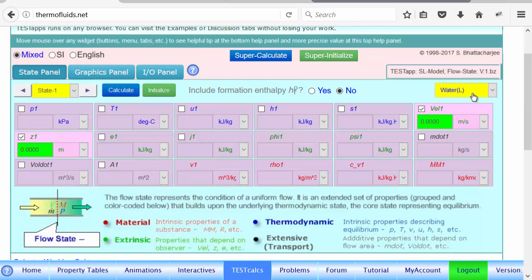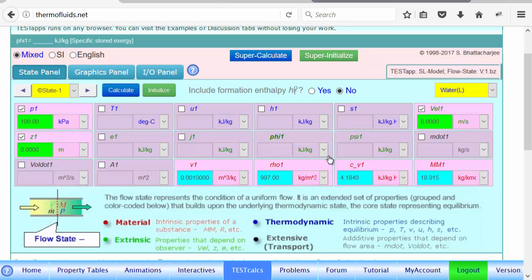Liquid water is already the default fluid, so we stick with liquid water. What is given is 100 kPa. Notice that the elevation is already set to zero. We don't need to change that. Notice that entropy cannot be calculated for the SL model. Here it is. You can see that it cannot be calculated unless the temperature is given.